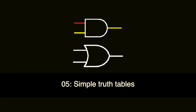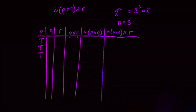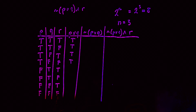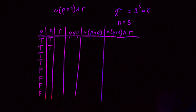Welcome to the next video on Boolean Algebra. In this video we're going to look at simple truth tables. Before we start looking at examples, let's talk about why we use truth tables and what they are for. We use truth tables because they are a simple visual representation of what a Boolean expression can do — showing all input combinations and the corresponding output for every single one of those combinations.